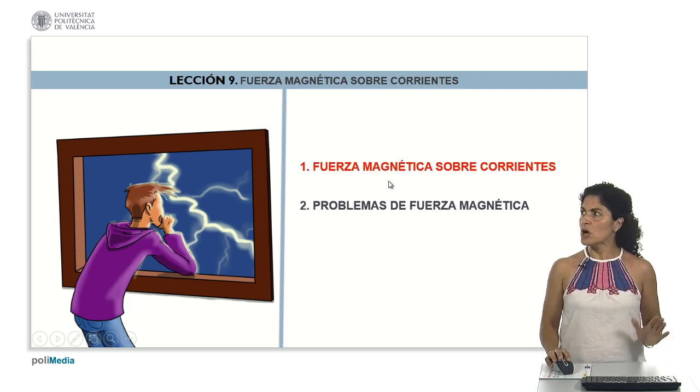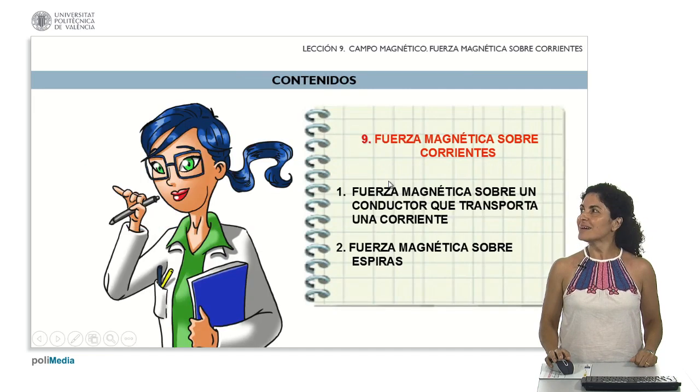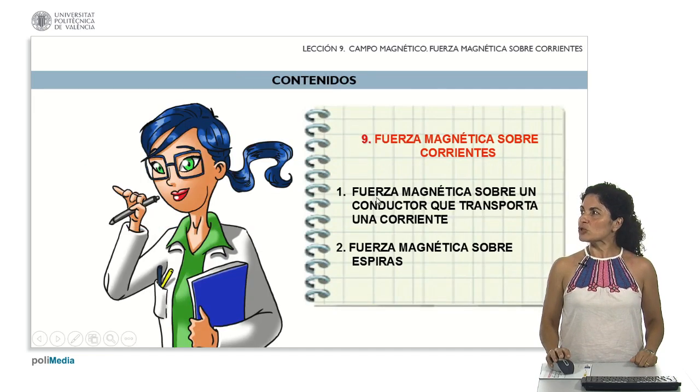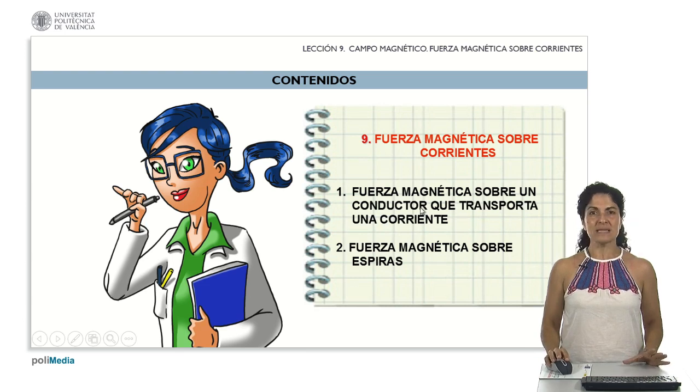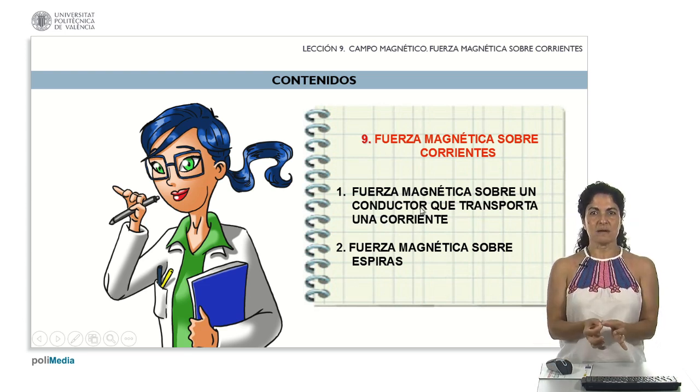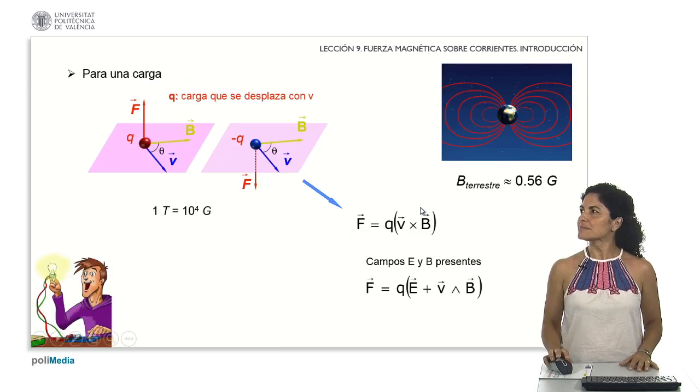Starting with the establishment of foundational concepts and laws crucial to our study, our initial focus will center on the analysis of the magnetic force acting upon a conductor conveying an electric current. Following this examination, our attention will shift to considering the formation of a closed circuit, a loop through which the current continuously circulates.